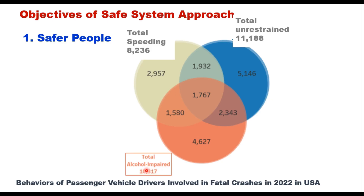Out of 10,317 deaths which occurred because of alcohol impairment, 1,580 involved drivers who were also speeding, and 1,767 deaths occurred when all three factors were present — alcohol impairment, unrestrained driving, and speeding. This gives a complete breakdown of the factors which influence road safety.